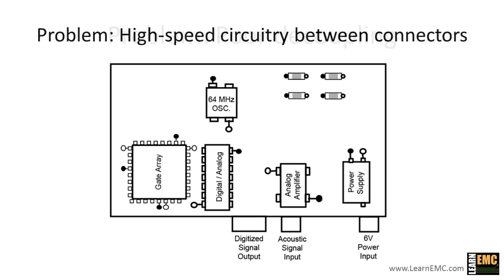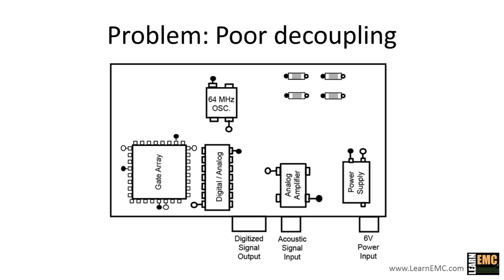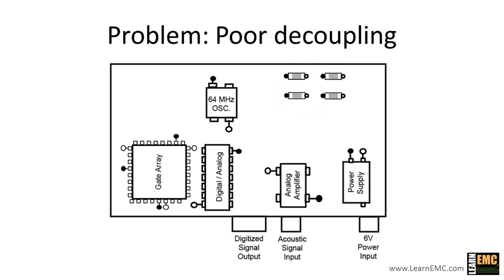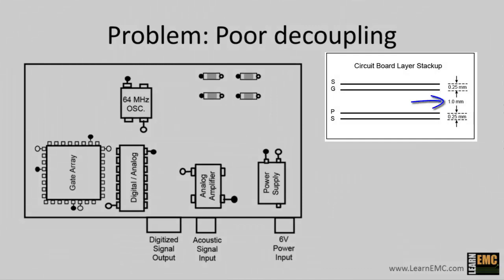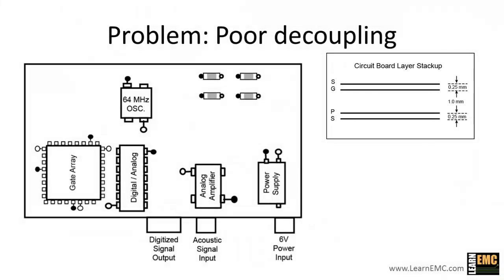The second major problem with the original board was poor decoupling. This can cause voltage variations between power and ground, which can affect the operation of the devices and can also cause radiation or signal integrity problems. Decoupling is intended to stabilize the voltage difference between power and ground. This board already has four decoupling capacitors, but the original placement of these capacitors was global. Boards that don't have closely spaced power and ground planes should have local decoupling. Recall that this board has widely spaced power and ground planes since they are separated by more than half a millimeter. When an active device on a board with widely spaced power and ground planes draws current, the current comes from the power planes first unless there is a local decoupling capacitor very close by. We need to move the existing decoupling capacitors much closer to the active devices and also add a few more.